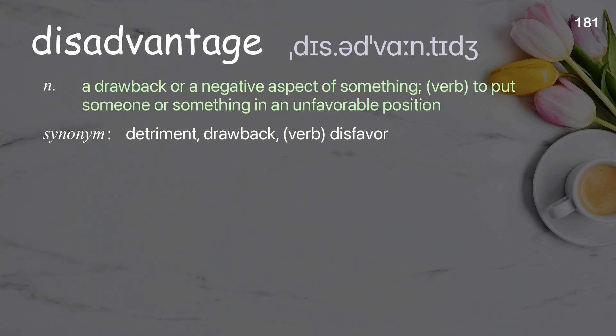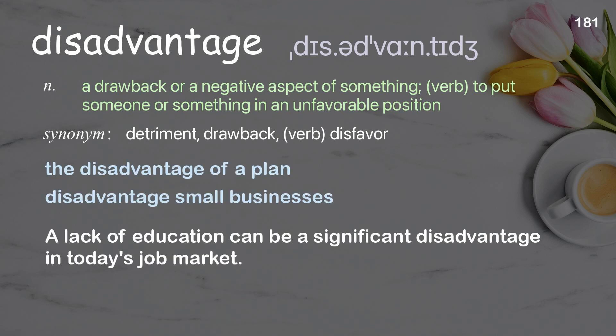Disadvantage: a drawback or a negative aspect of something; verb: to put someone or something in an unfavorable position. Examples: the disadvantage of a plan, disadvantage small businesses. A lack of education can be a significant disadvantage in today's job market.